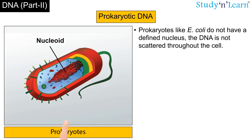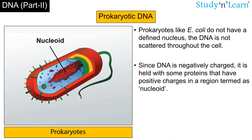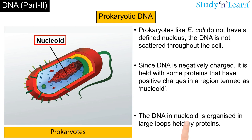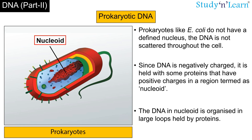In prokaryotes like E. coli, which do not have a defined nucleus, the DNA is not scattered throughout the cell. Since DNA is negatively charged, it is held with some proteins that have positive charges in a region termed the nucleoid. The DNA in the nucleoid is organized in large loops held by proteins.